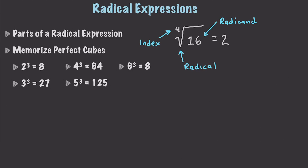Whenever you're working with radical expressions, most people know the square of values, the main values 1 through 12. But it's also kind of important to memorize at least the cubes for the values 2 through 6 — it's useful in many situations. I have no idea why I have an 8 here; this should be 216.